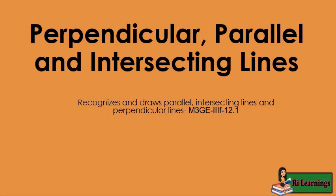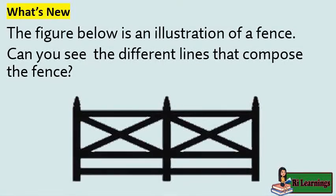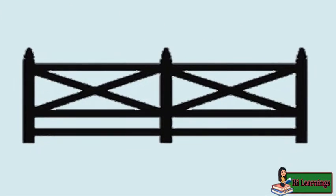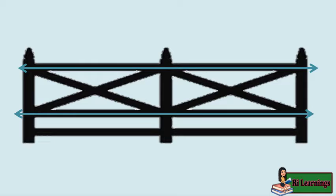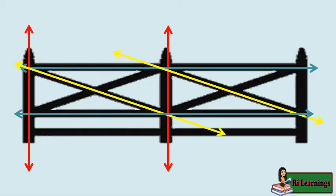Perpendicular, parallel and intersecting lines. The figure below is an illustration of a fence. Can you see the different lines that compose the fence? The fence is composed of horizontal, vertical, and diagonal lines.